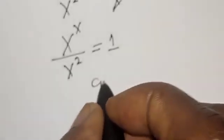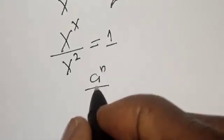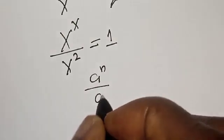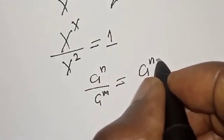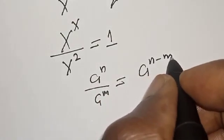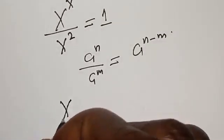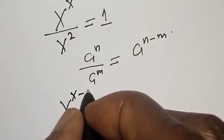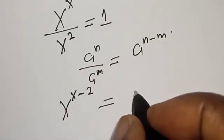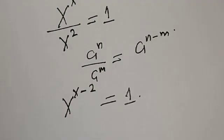Now remember that if you have a raised to power n over a raised to power m, this is the same thing as a raised to power n minus m. Then our left hand side becomes s raised to power s minus two, is equal to one.